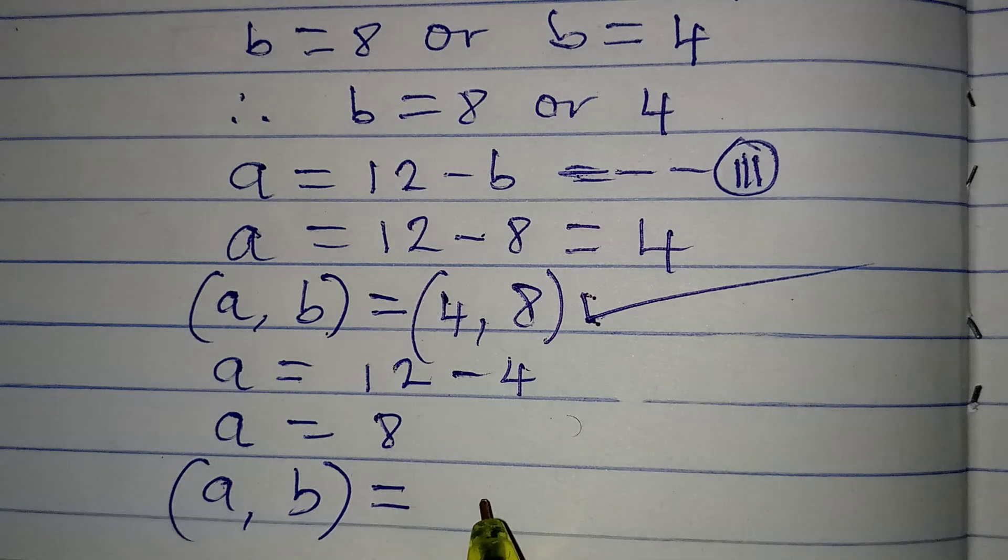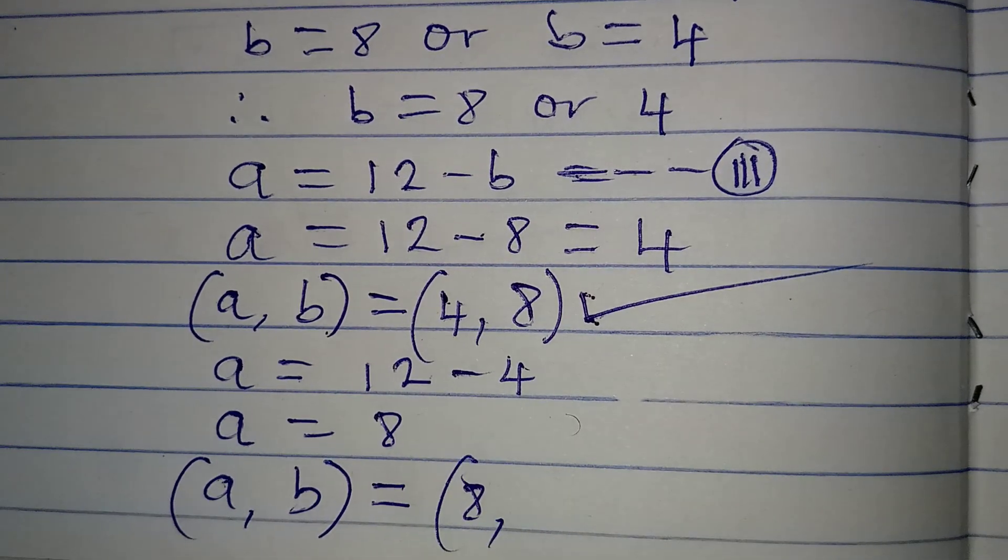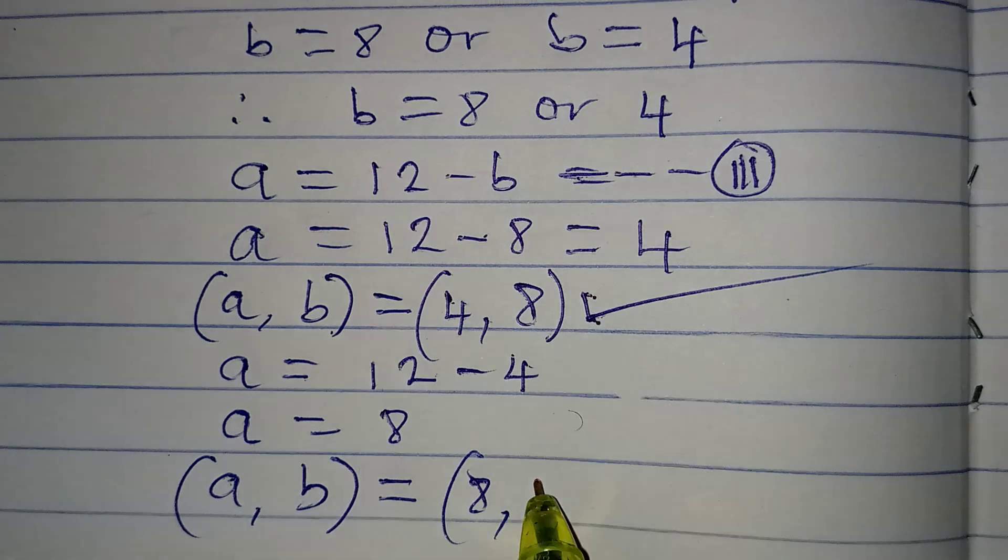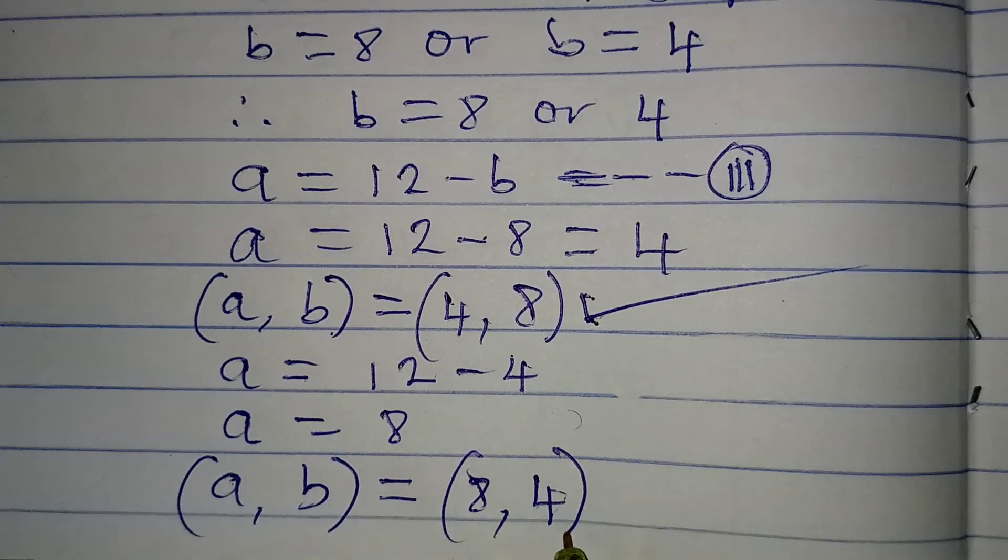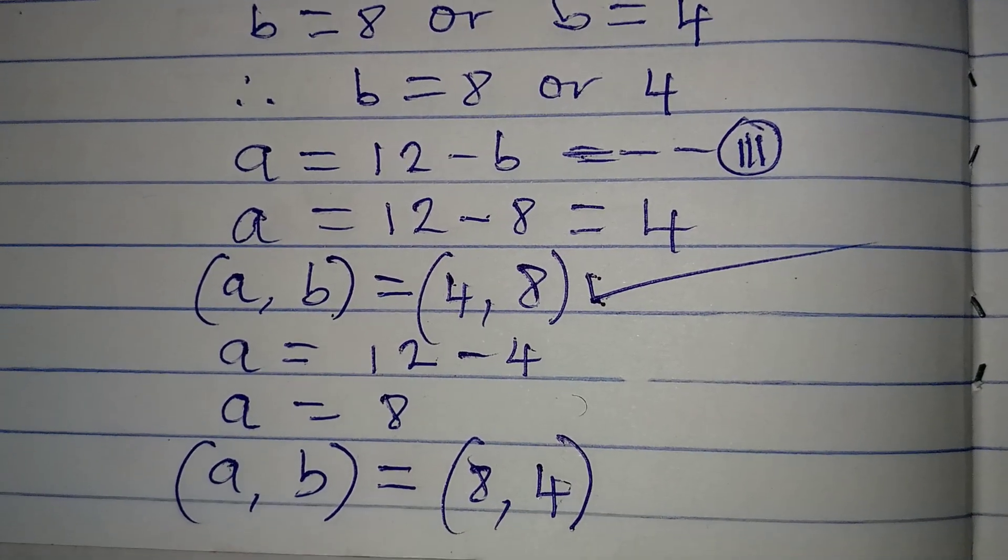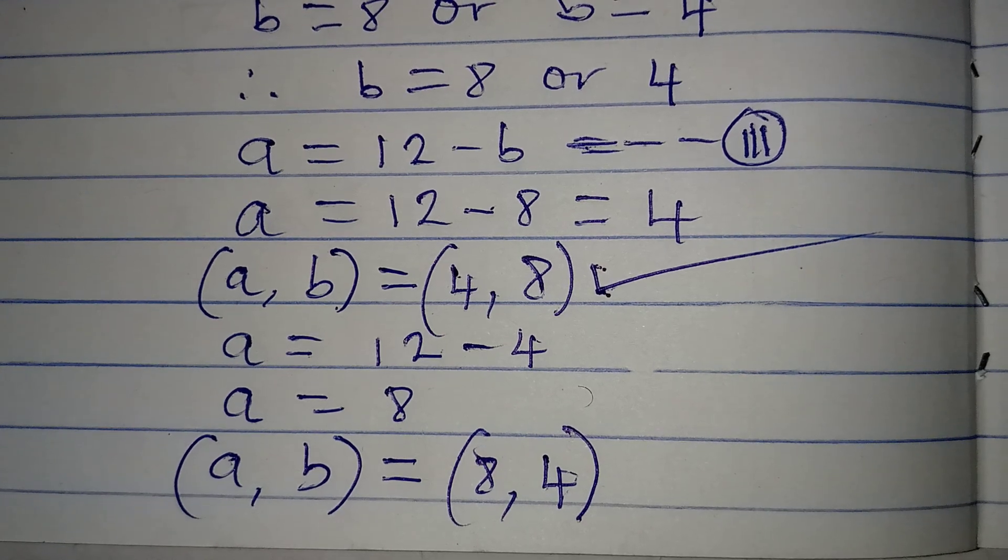Guess what B is? B is 4. Now, I'm going to tell us why these two values are going to be correct.